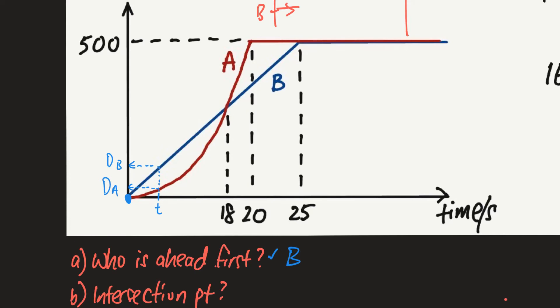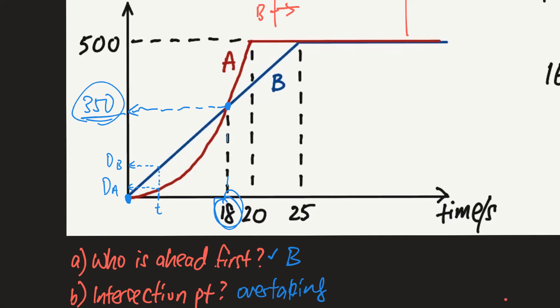Next, regarding the intersection point: at this point, at time equals 18 seconds, both cyclist A and cyclist B have covered the same distance from the starting point. Let's give it a value of 350 meters. This means overtaking has taken place — B was ahead initially, and at time equals 18 seconds, A catches up. When overtaking takes place, both cyclists must have traveled the same distance, so the intersection point on a distance-time graph means overtaking is occurring there.